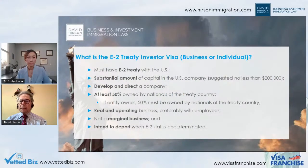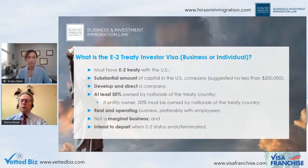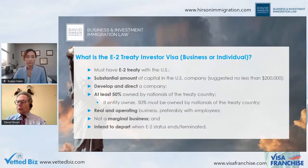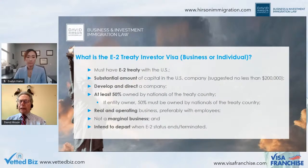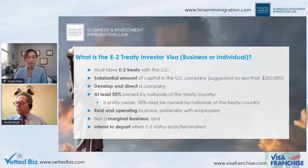The operation has to be real and operating — it cannot be a plan with money in the bank. It cannot be a marginal enterprise; it has to generate sufficient income beyond the living income for the investor and family. The individual also has to intend to depart the US at the end of the E2 visa, which is a lesser standard than the B1/B2 or F1 visas.